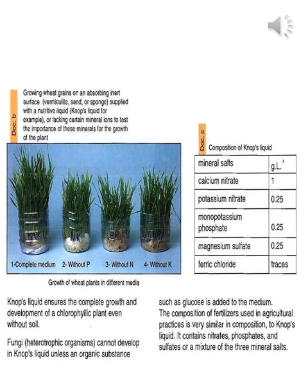This information is specific to green plants, which are autotrophs. However, fungi, which are heterotrophic organisms, cannot develop in Nobs liquid unless an organic substance such as glucose is added to the medium. The composition of fertilizers used in agricultural practices is very similar to Nobs liquid — it contains nitrates, phosphates, and sulfates, or a mixture of these three minerals.